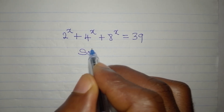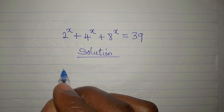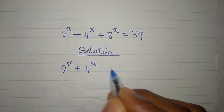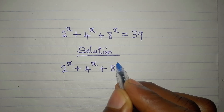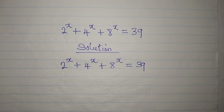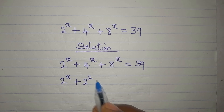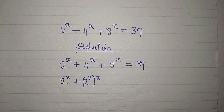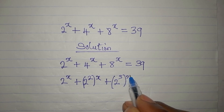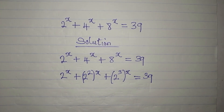Let's provide the solution. We have 2 to the power of x plus 4 to the power of x plus 8 to the power of x equals 39. Now, 4 is 2 to the power of 2, so we have 2 squared to the power of x, and 8 is 2 to the power of 3, so we have 2 cubed to the power of x. This is equal to 39.